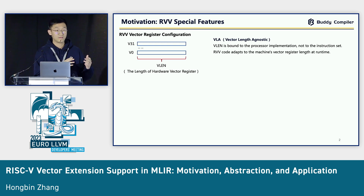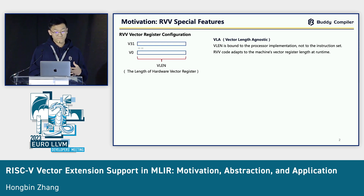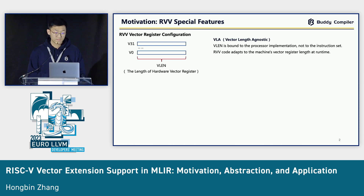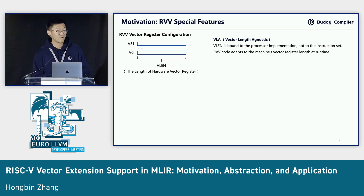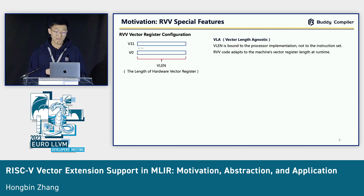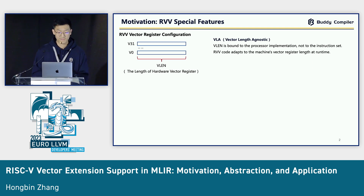We have 32 registers, so the length of the hardware register is the VLEN. When we talk about VLEN, it is bound to the processor implementation on the RVV side — not bound to the instruction set. The RVV code can adapt to the machine vector length at runtime. That is amazing.